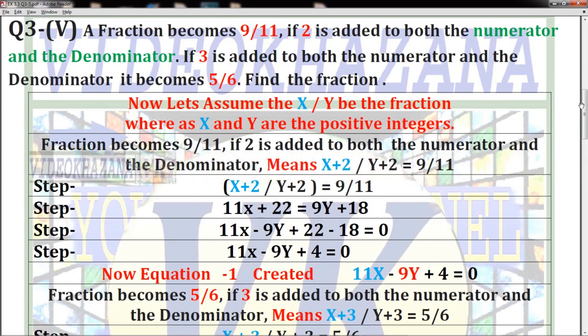Numerator means upper value, denominator means lower value. If we add 2 to both values, then 9/11 becomes our fraction.